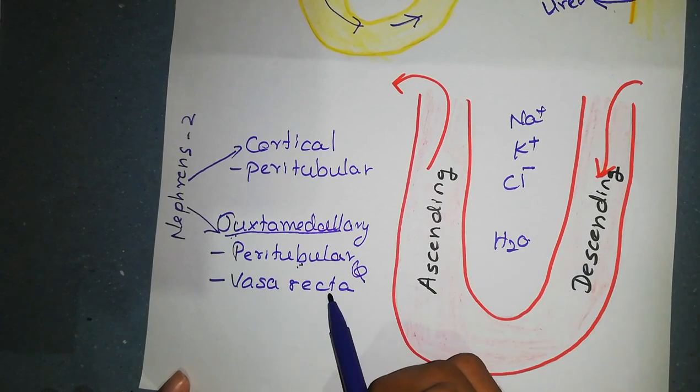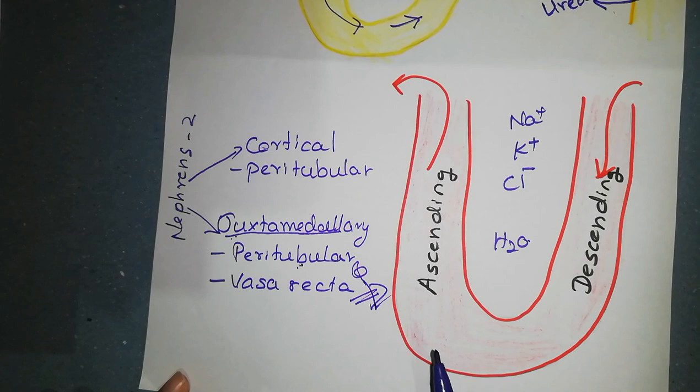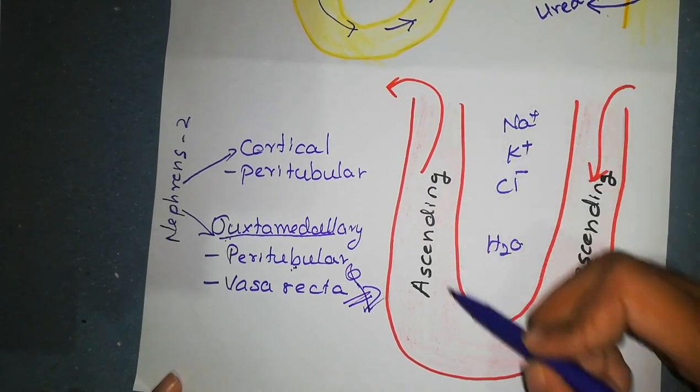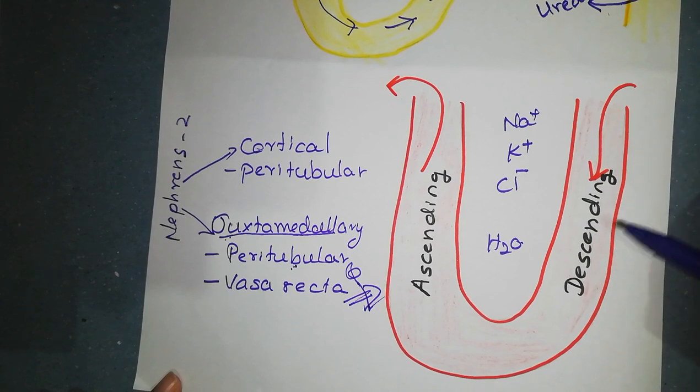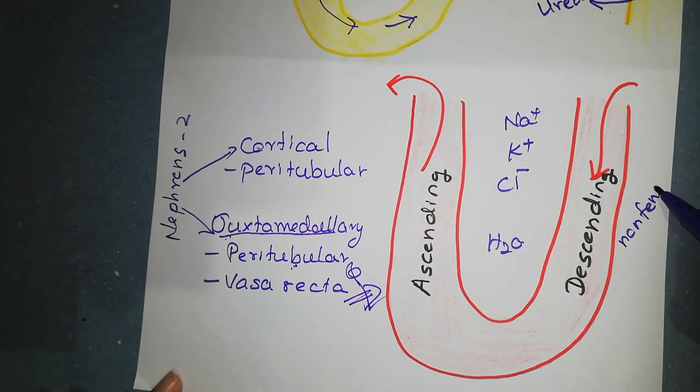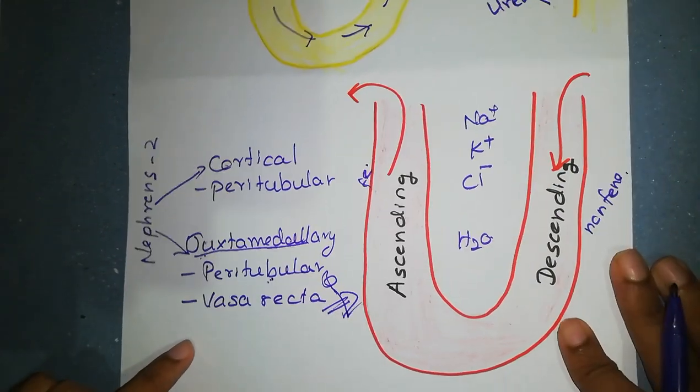But capillaries of juxta medullary nephrons drain not only to the peritubular capillaries, but also to vasa recta. Vasa recta dips into the medullary with loop of Henle. Let's concentrate on vasa recta. Here is the descending vasa recta which is non-fenestrated and this is the ascending vasa recta which is fenestrated. See it also has a counter current mechanism.